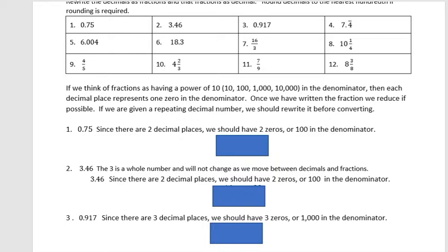Powers of ten are ten, one hundred, one thousand, ten thousand, a hundred thousand, one million, etc. Once we have written the fraction, reduce if possible. And if you're given a repeating decimal number, you should rewrite it before converting.